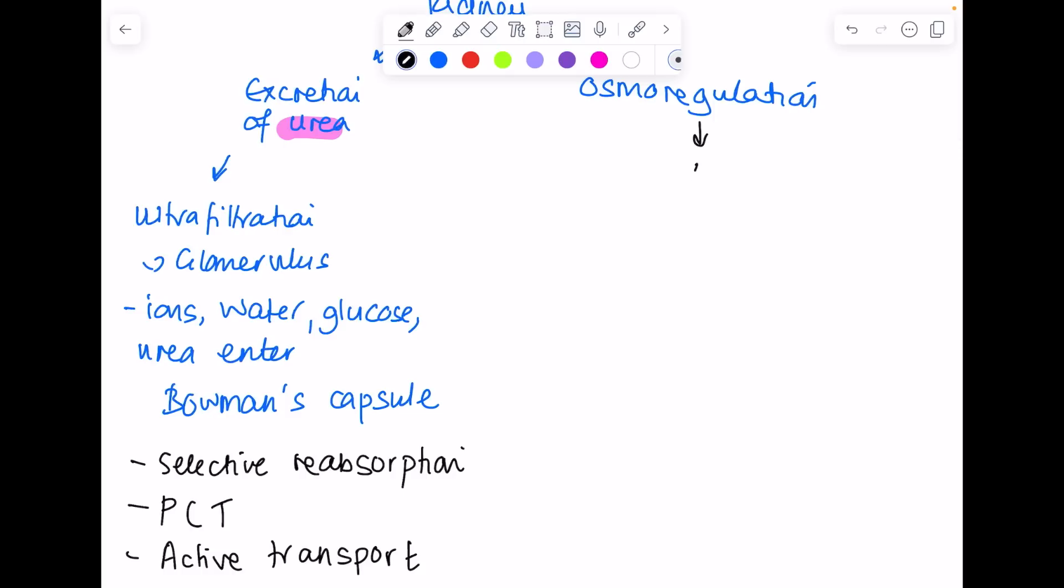Osmoregulation is all to do with the hormone ADH. Make sure you are aware that water levels are detected by osmoreceptors in the hypothalamus, that the pituitary gland releases ADH, and that ADH acts on the kidney's collecting duct, altering its permeability.